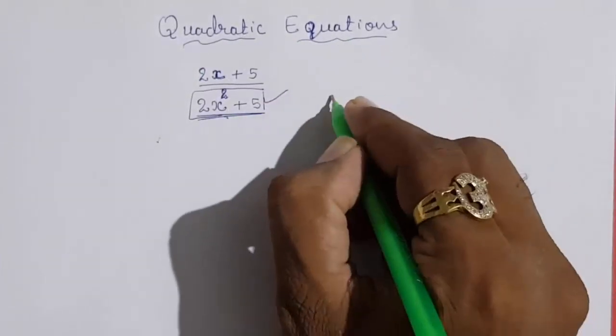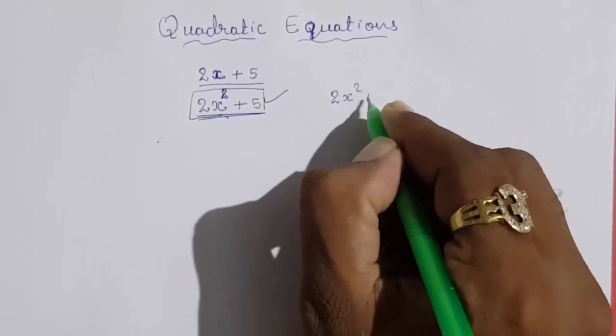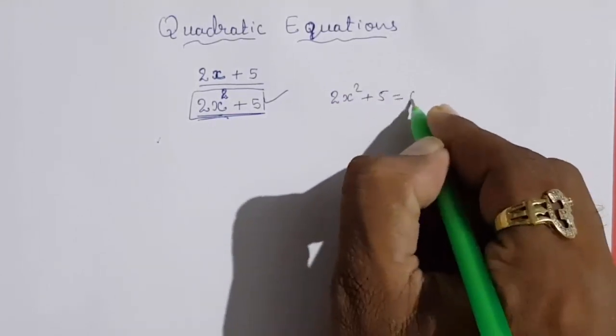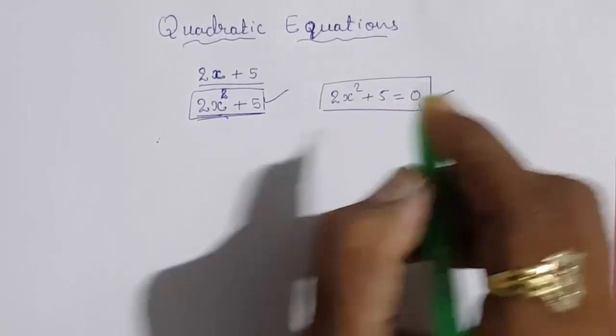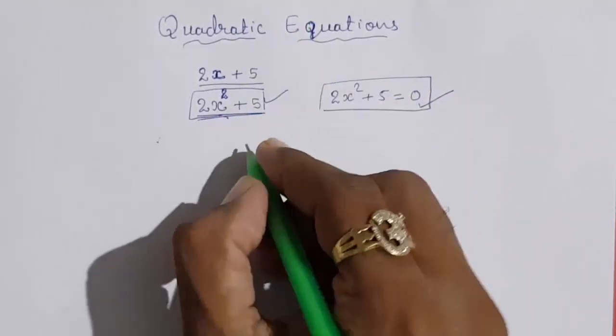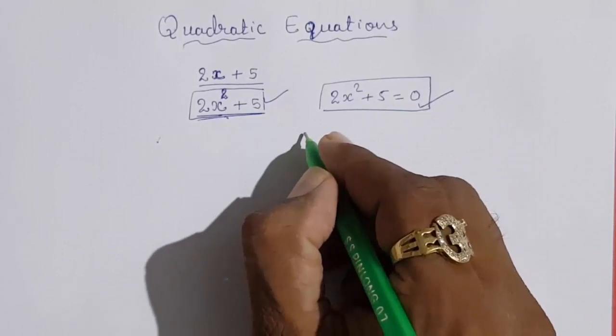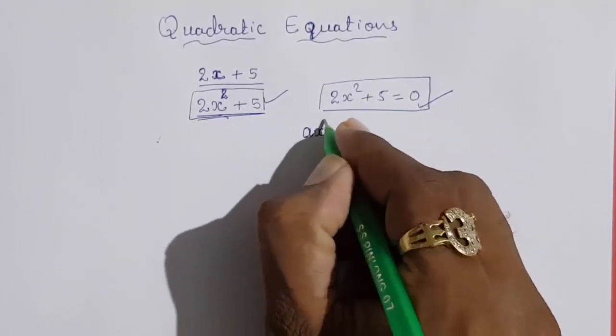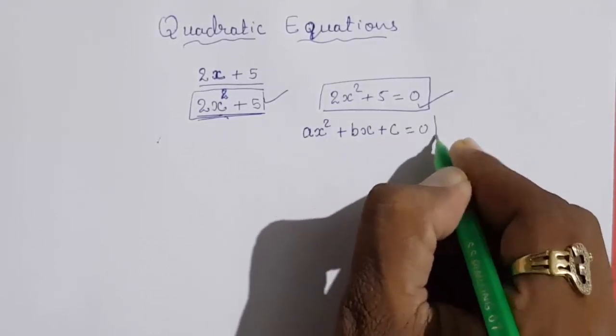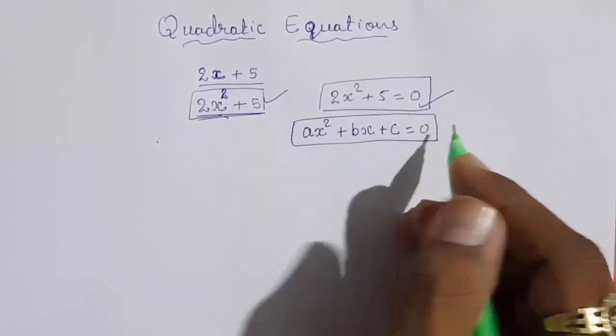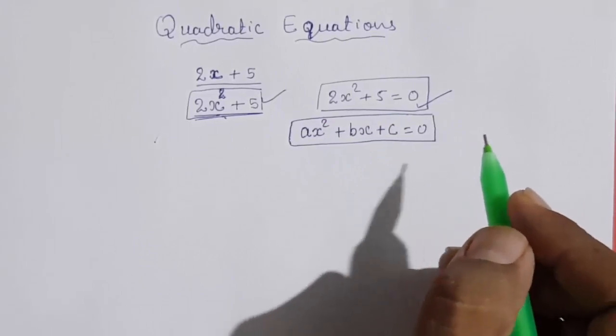When you form an equation with this, 2x² plus 5 equals 0, this is a quadratic equation. The actual standard form of any quadratic equation is ax² plus bx plus c equals 0. This is the standard form of any quadratic equation.